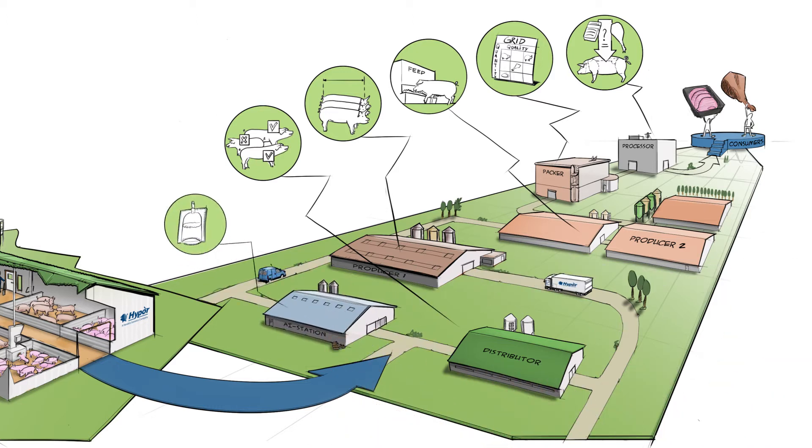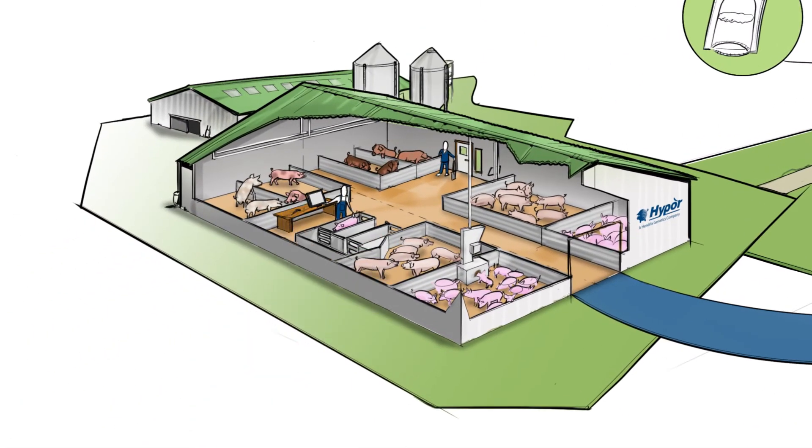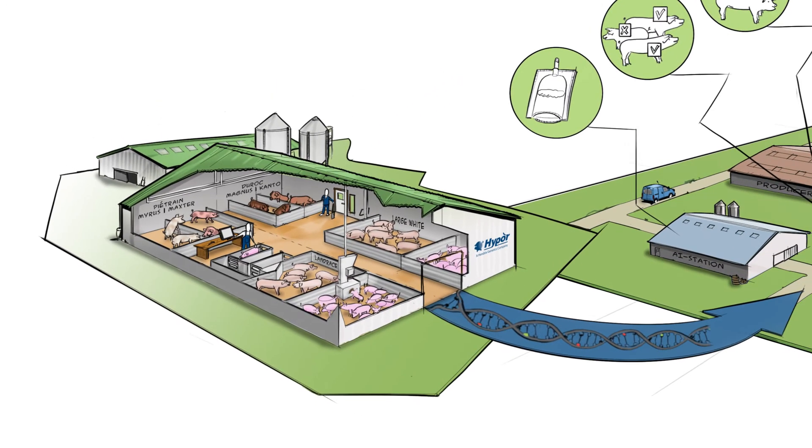Artificial insemination stations supply semen of quality boars. Hypoor has a highly effective genetic program that consists of two sow lines and four boar lines. The genetics of these lines are advancing every day.